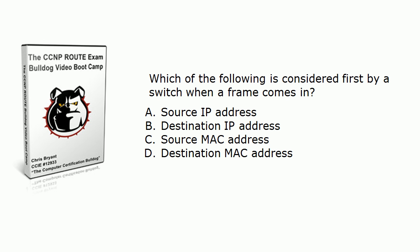Here's a multiple choice question. Which of these four values is a Cisco switch going to consider first when a frame comes in on a port? Is it going to look at the source IP, the destination IP, the source MAC, or the destination MAC?